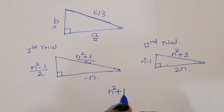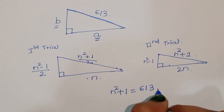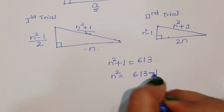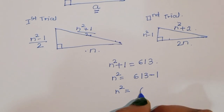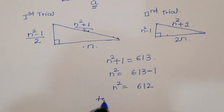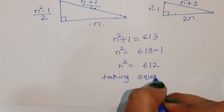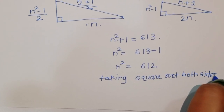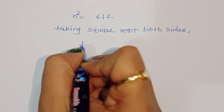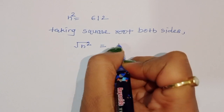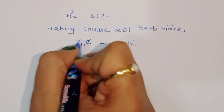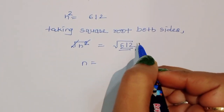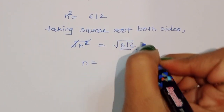Setting n squared plus 1 equal to 613, we can write n squared equals 613 minus 1, so n squared equals 612. Taking the square root of both sides, we need n equal to the square root of 612. But 612 is not a perfect square, so this trial is rejected.